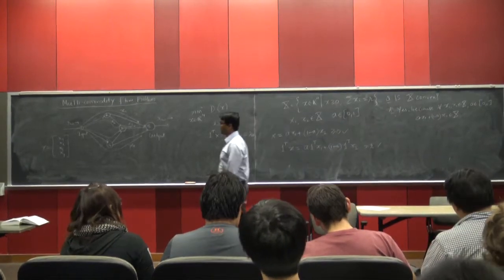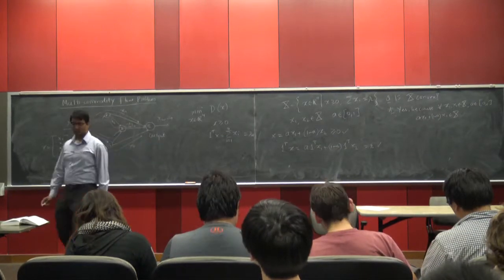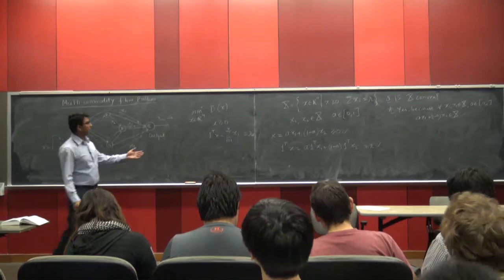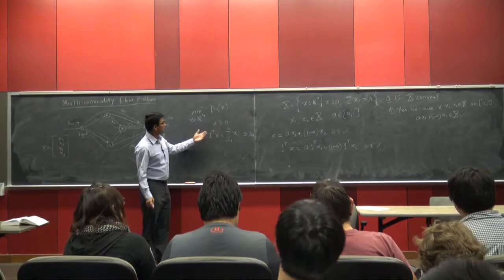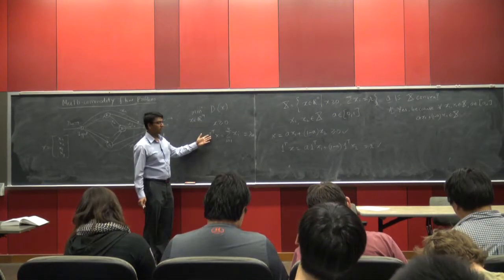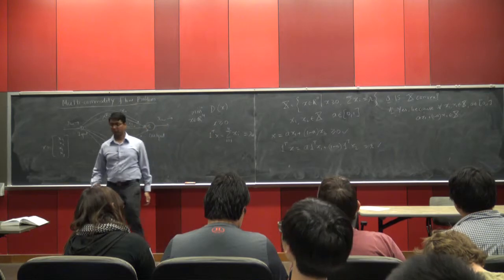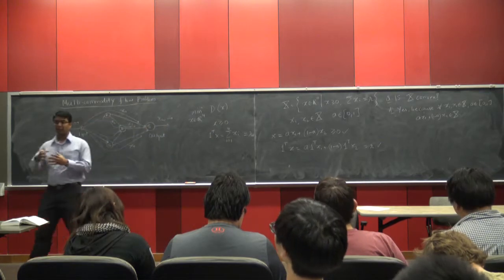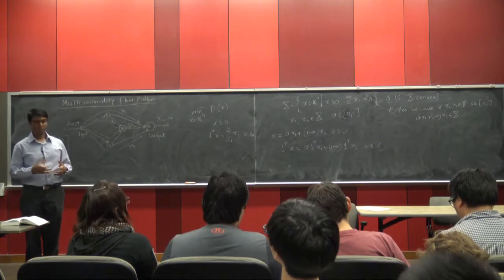The answer is yes because λX1 + (1−λ)X2 belongs to X for every X1, X2 in X and λ in [0,1]. So it is a convex set, and this becomes an optimization problem over a convex set — that is why it is a constrained optimization problem, but the constraint set itself is convex.